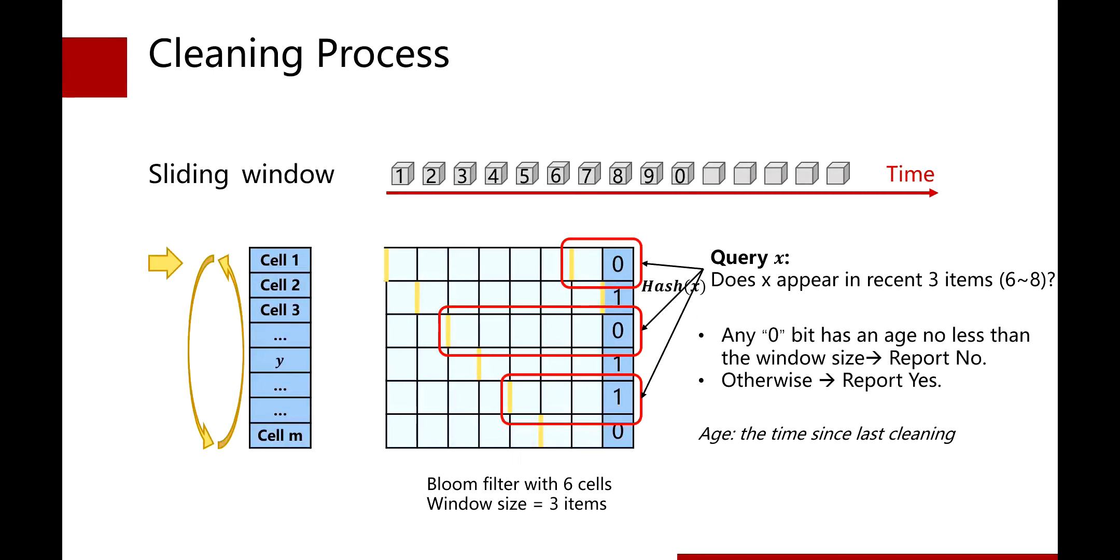So what's the formal query method? When the user query item X, we find all its selected bits by hashing. Then check if any zero bits has an age no less than the window size. If so, we are sure that the item must never appeared in the sliding window. Otherwise, we report yes, which may be a wrong answer with a small probability.